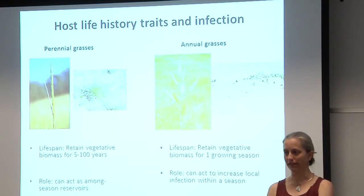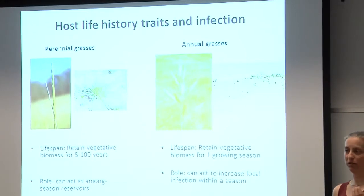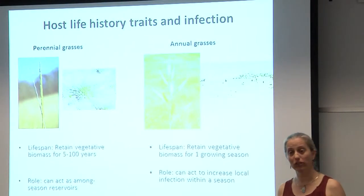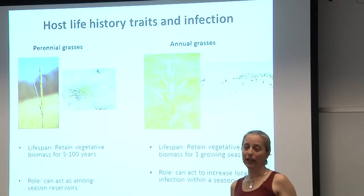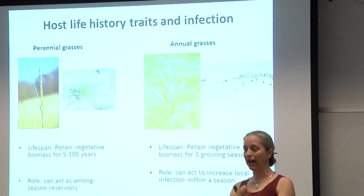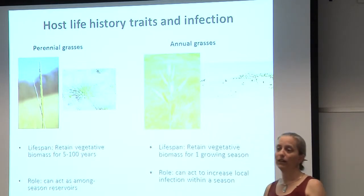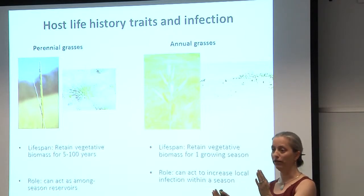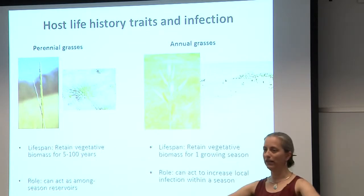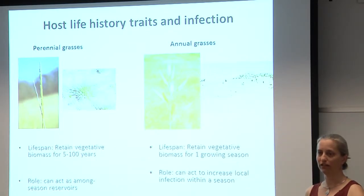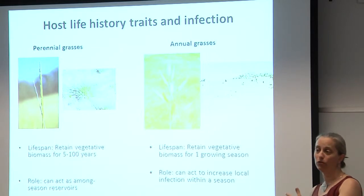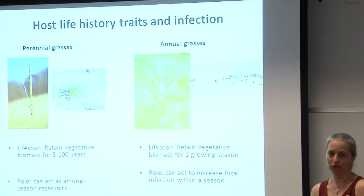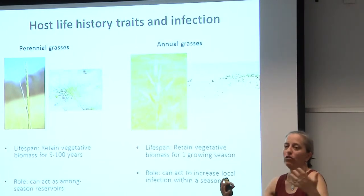I need to give you a little background on grasses. We have perennial grasses and annual grasses in this system. Perennial grasses can live for up to a century and are not known to lose their infection, so they act as among-season reservoirs of infection. Annual grasses will only retain their vegetative biomass — and thus their viral infection — for one season: they grow, set seed, drop the seed, and that's it. So in a world with only annual grasses, this viral group wouldn't persist. But annuals tend to be a good host for vectors and for the virus, and so increase the prevalence of infection within a season.